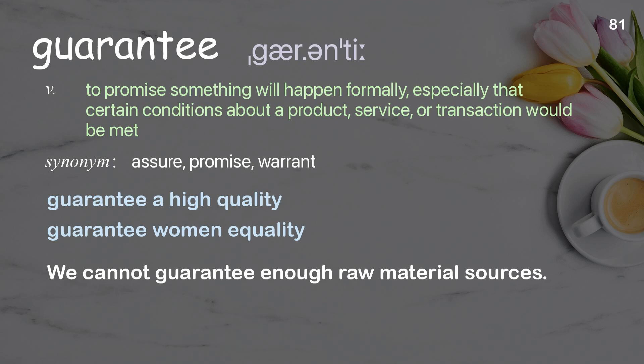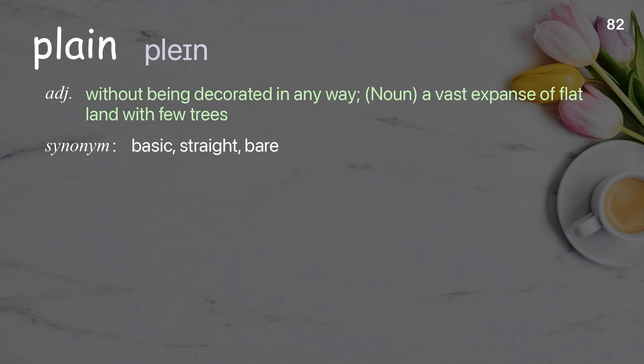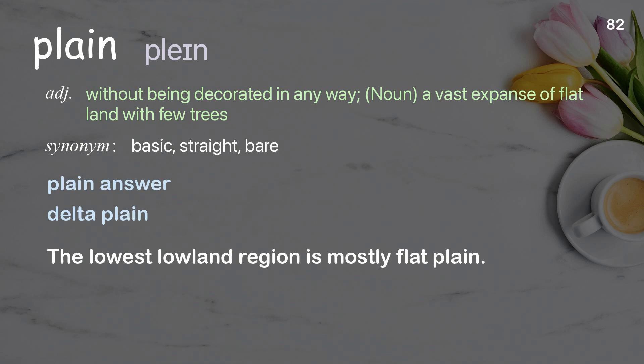Plain: without being decorated in any way. Noun: a vast expanse of flat land with few trees. Examples: plain answer, delta plain. The lowest lowland region is mostly flat plain.